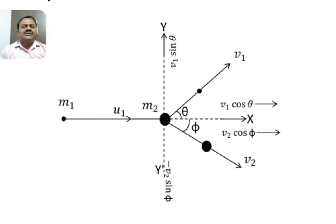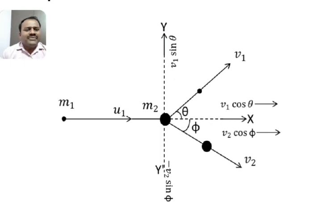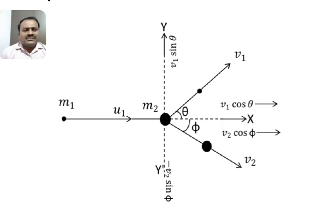Here M1 is the projectile, M2 is the mass of the target, and M1 is moving with velocity U1. After collision, M1 moves with velocity V1 making angle theta with the x-axis, and the target particle moves with velocity V2 making angle phi with the x-axis. Resolving V1 and V2 along x and y directions: V1 has components V1·cosθ along x and V1·sinθ along y; V2 has components V2·cosφ along x and −V2·sinφ along y.